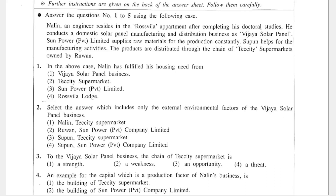So firstly you have a case as usual for the first 5 questions. Nalin, an engineer, resides in the Rosvilla apartment after completing his doctoral studies. He conducts a domestic solar panel manufacturing and distribution business as Vijaya Solar Panel. The Sun Power Private Limited supplies raw materials for the production constantly. Supun helps for the manufacturing activities. The products are distributed through the chain of Teciti Supermarkets which is owned by Ruan.